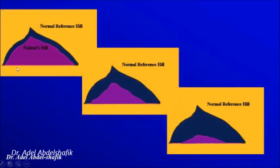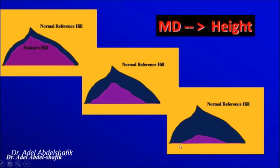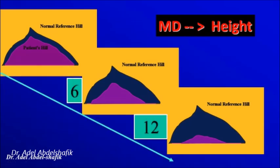The mean deviation can show a slightly depressed field, a more depressed field, or a severely depressed field. It gives us an indication of the general height of the field. We are accustomed to saying: if the value is below 6, there is mild depression; between 6 and 12 is moderate depression; and more than 12 is severe depression of the field.